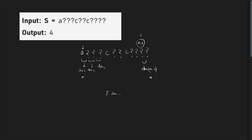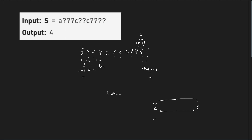First of all, we need to understand when the answer can be minus 1. Obviously, if there are already two characters at some positions — we don't care about what's in between — if those two characters are different from each other and they should mirror each other in a palindrome, then the answer will be straight away minus 1.